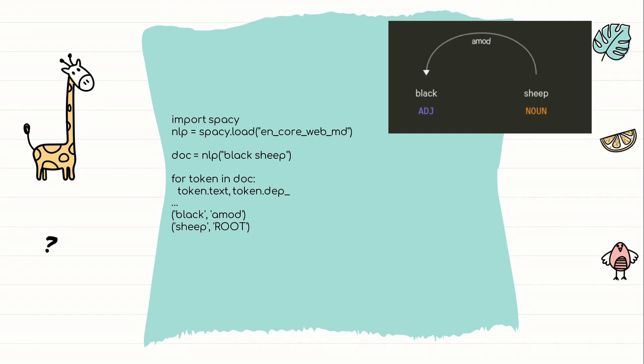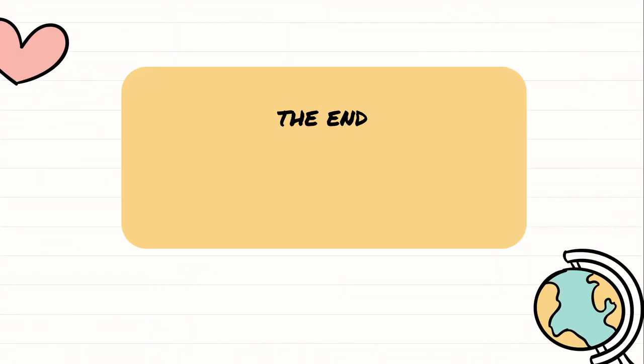Now we do spaCy. Let's see a previous example. Please look at the figure. Black sheep again. Let's do it programmatically. The dependency label is assigned to the child. Token objects have DEP, which is an internal ID, a number, and DEP underscore property that holds the dependency label. That's it indeed.